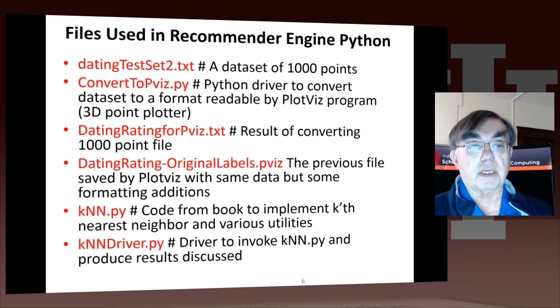This section uses the following files, which are available. There is the file from the book, DatingTestSet2.txt, which is a dataset of a thousand points which we'll be classifying and using to produce recommendations. We have a little Python driver to convert that into the format used by the 3D plotter. We have two files corresponding to the results of this conversion. The .txt file is the raw file produced by the Python driver. The .pviz file is output from PlotViz itself, and it has various formatting to make it look prettier. We have the Python file KNN, which essentially comes from the book and implements the k-nearest neighbor and various utilities. And we have the driver file we're going to use in our IPython window to invoke these basic functions.